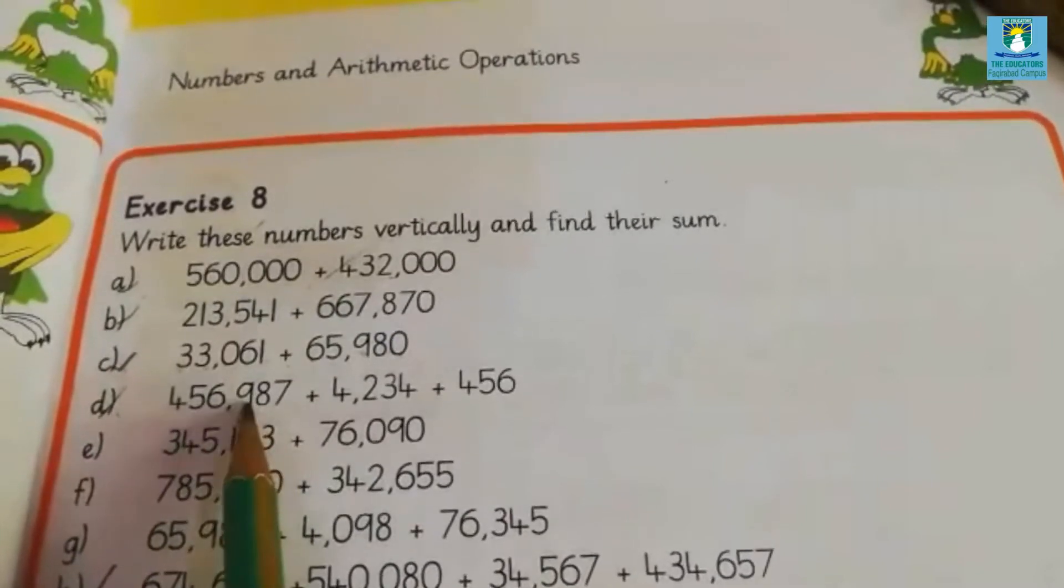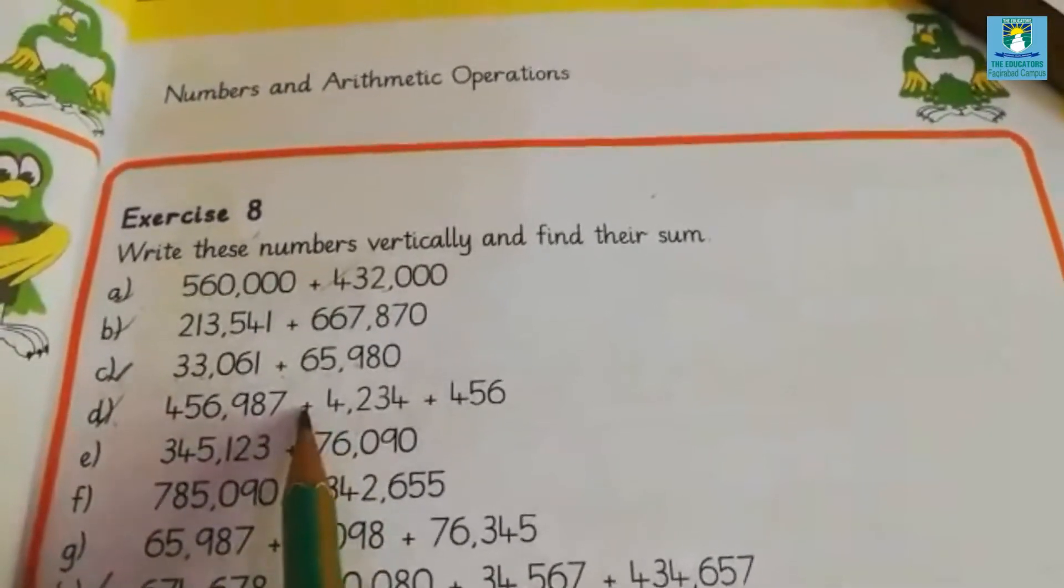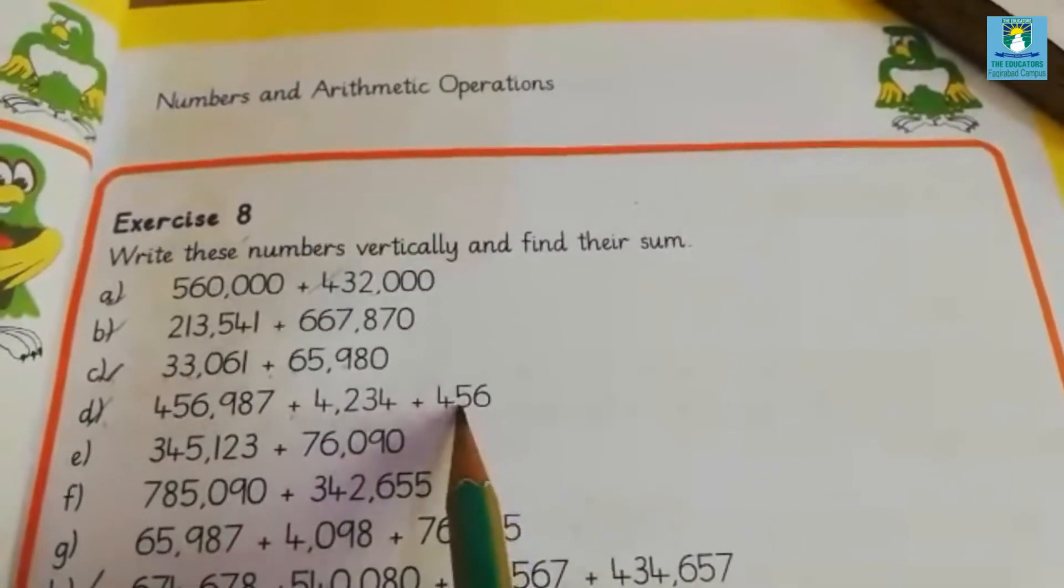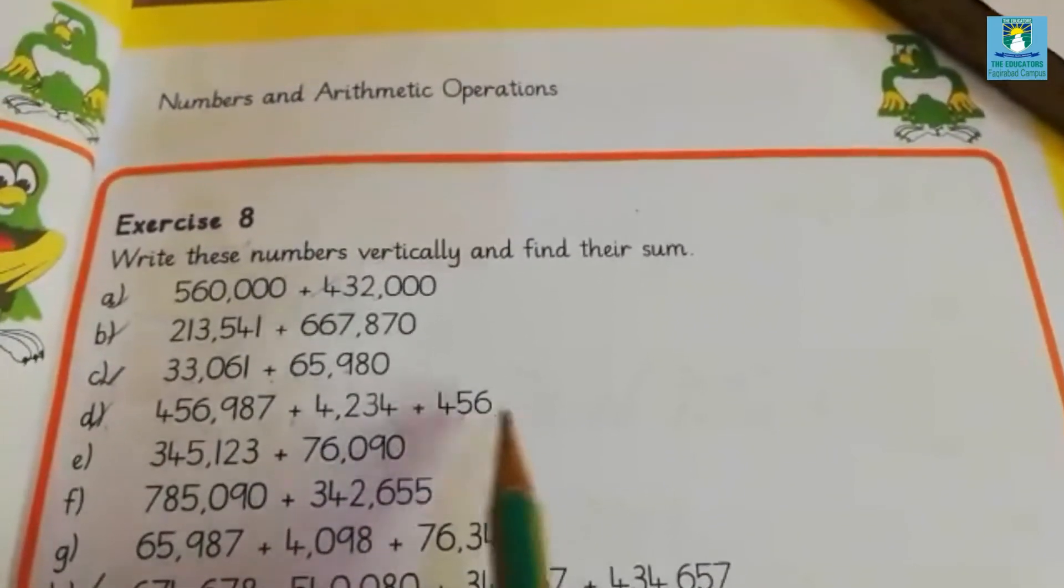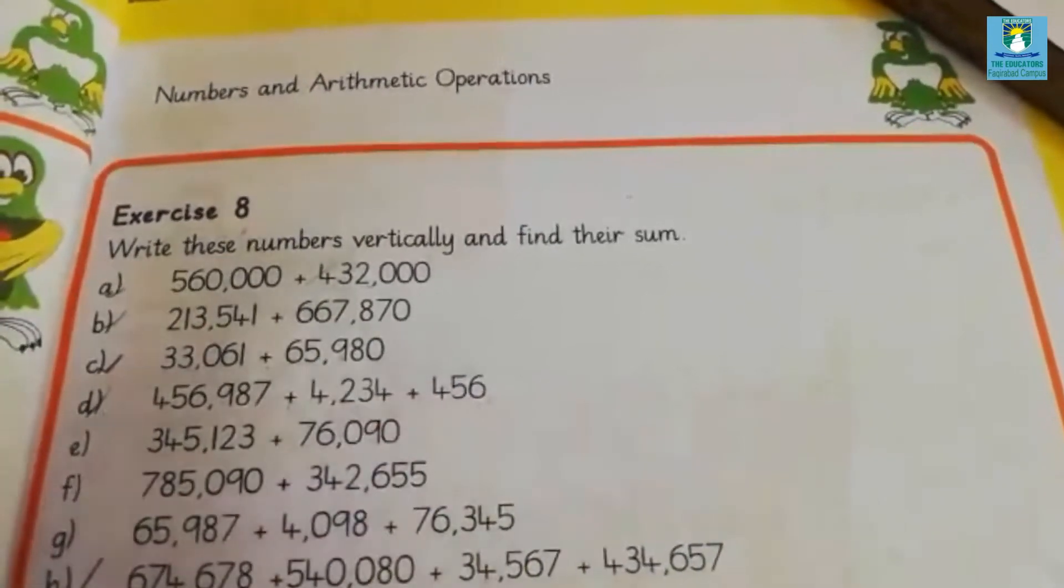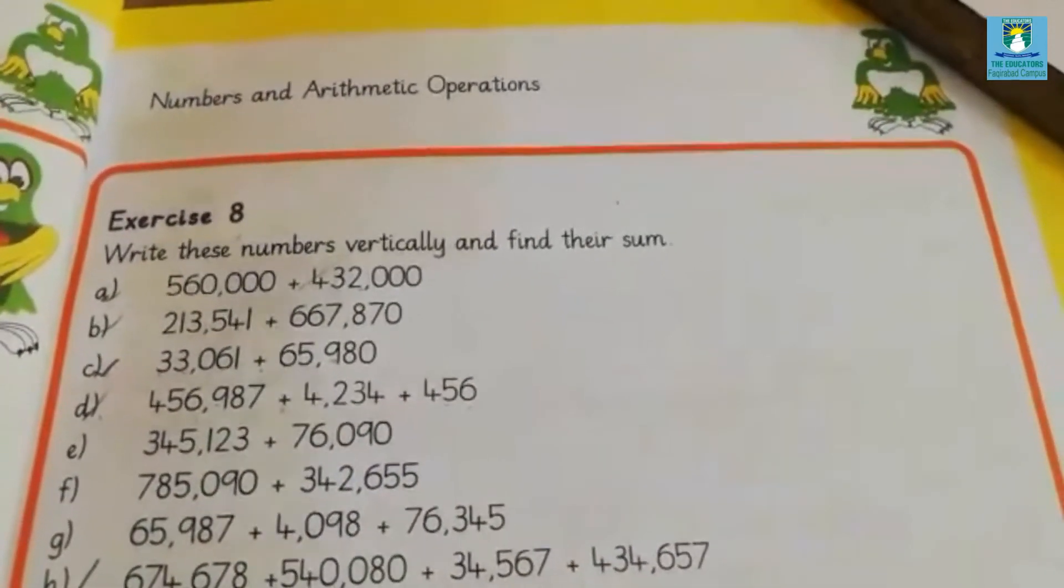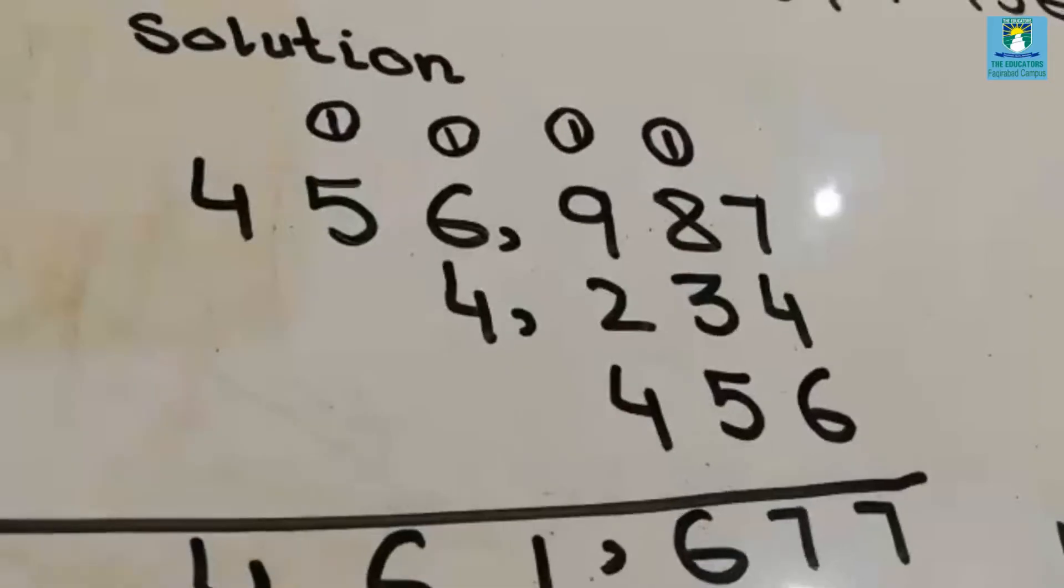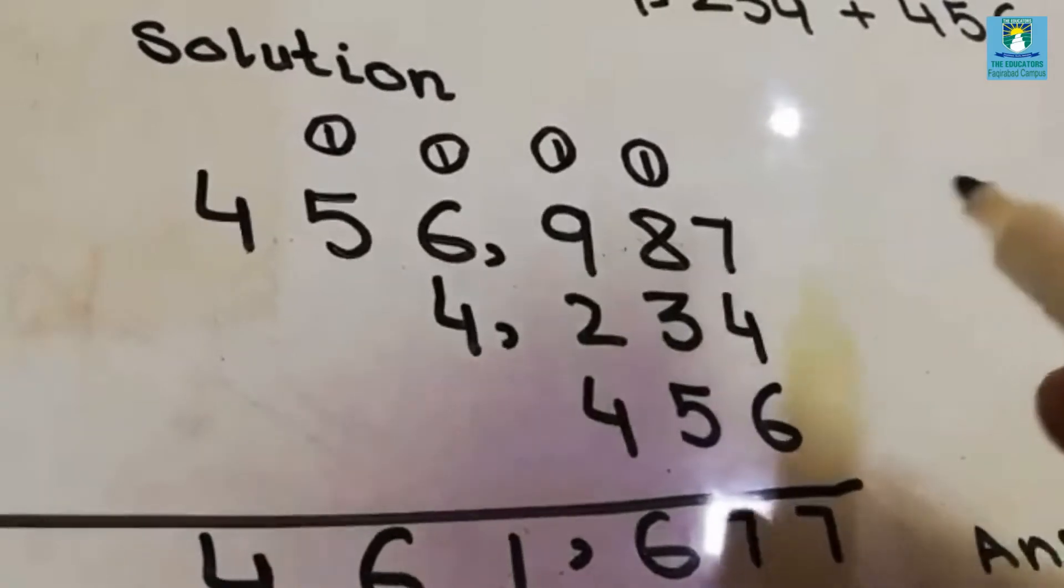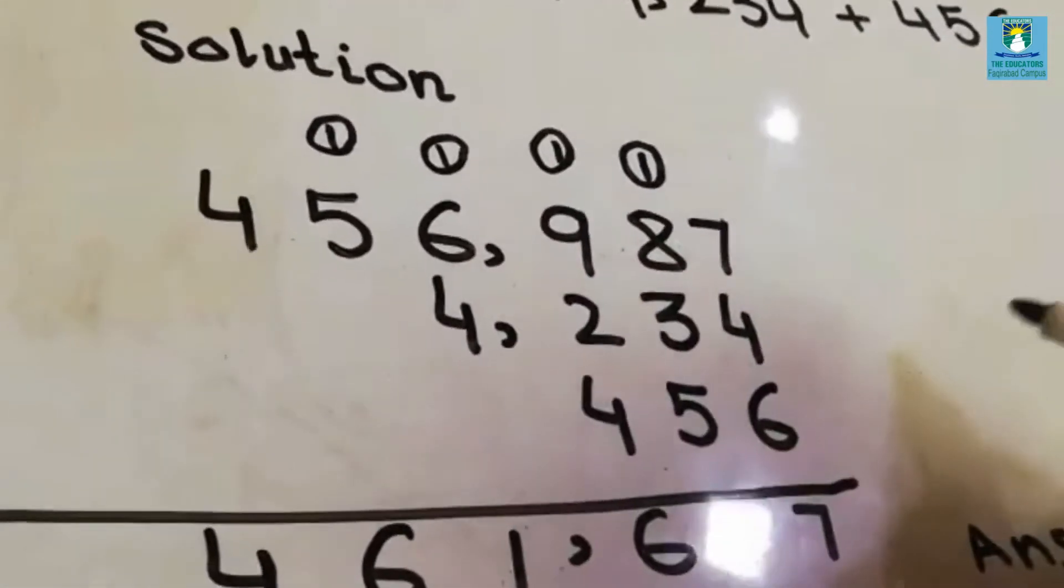456,987 plus 4,234 plus 456, students. Here we have 3 numbers, so we will add these 3 values. First we will write the values vertically. Now we have to find out their sum.